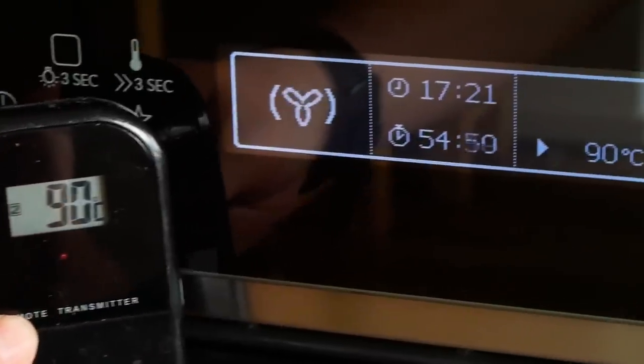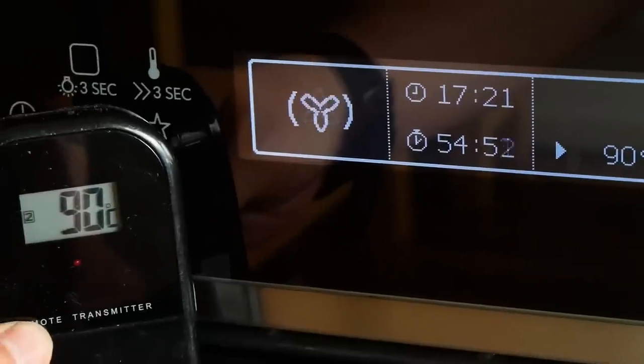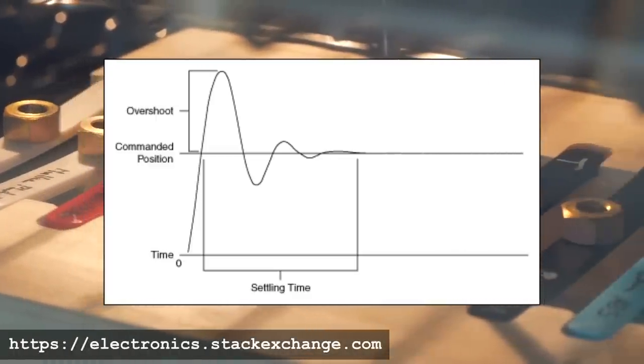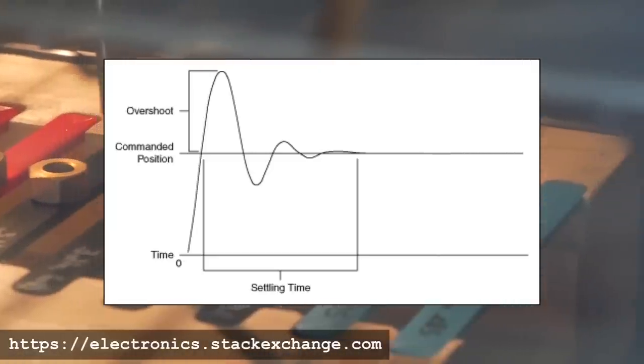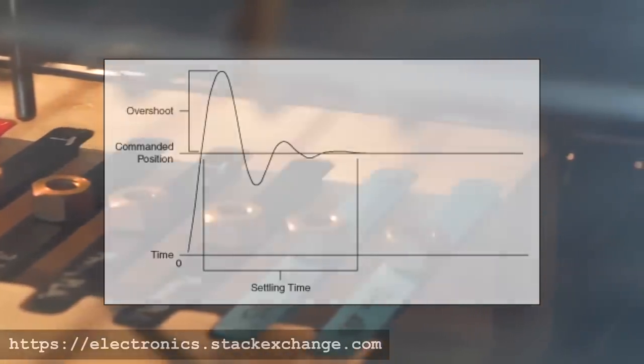So the first thing I noticed was that even though my oven can hold a set temperature quite well, the control algorithm leads to quite significant overshoots during the heat up which I had to counteract with opening the door from time to time to reduce that problem.